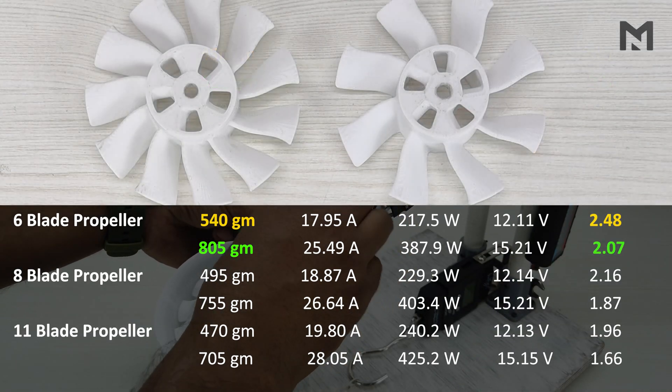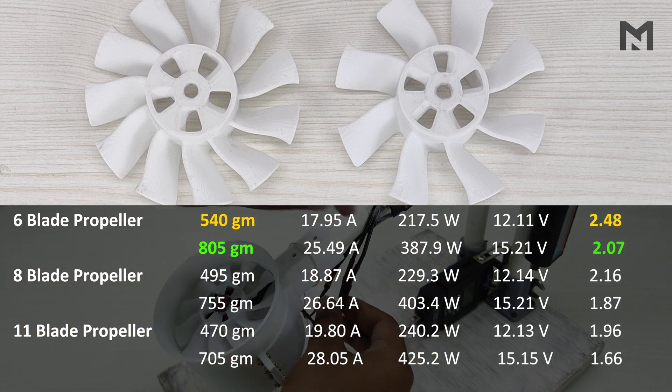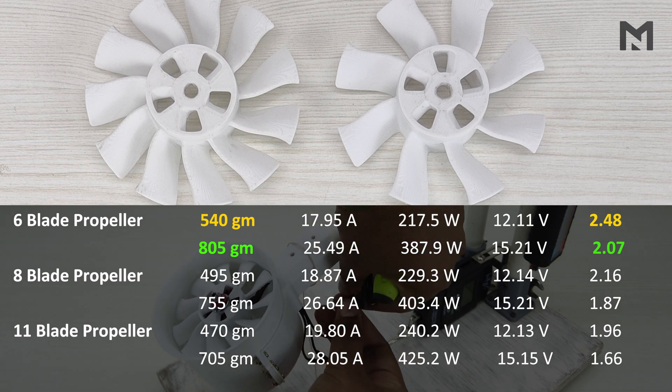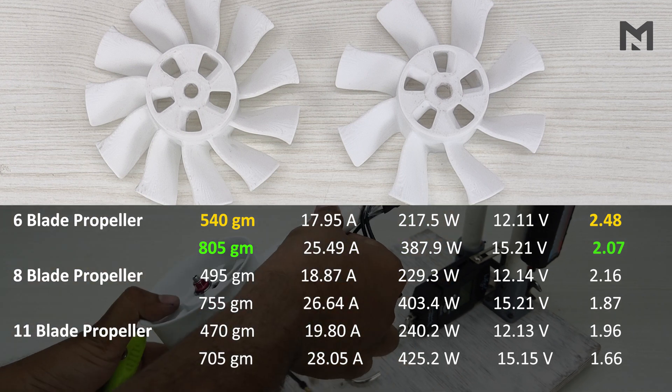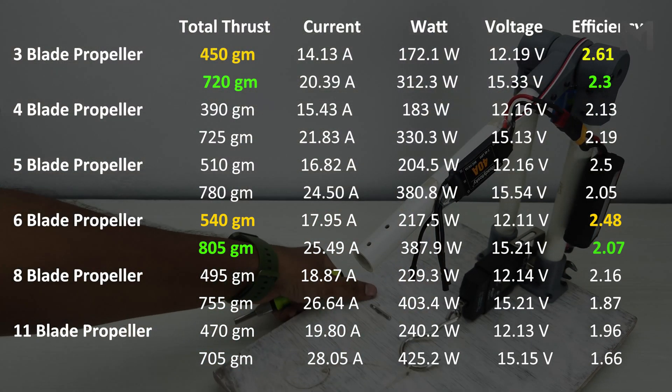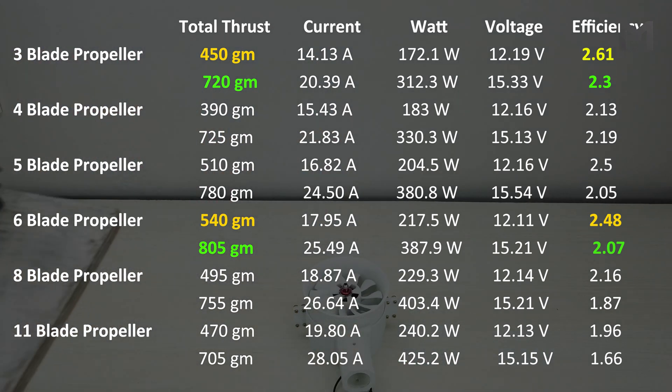Though 8 blade and 11 blade propellers have more blades than a 6 blade propeller, they didn't perform well in this scenario. Because more blades require more motor torque, but our motor has high rpm and low torque. So this could be one of the possible reasons. Thank you all for recommending that I reduce the propeller pitch and use stator blades, because it made a significant difference in thrust and efficiency when compared to the previous video.